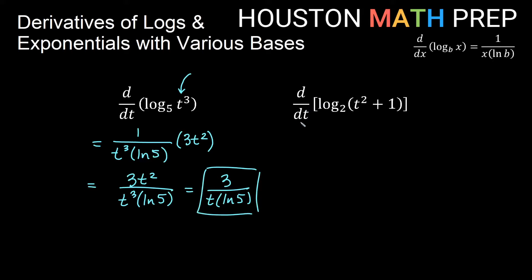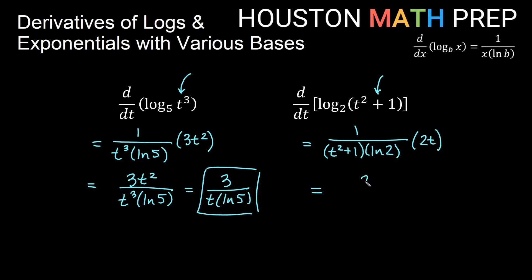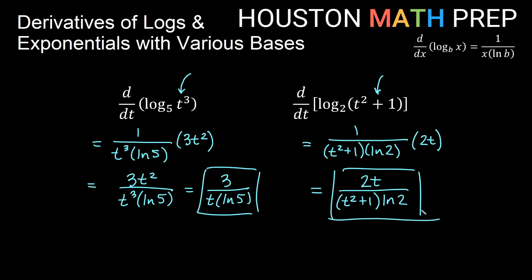Derivative with respect to t of log base 2 of (t squared plus 1): the derivative of log of something is 1 over that something — so 1 over (t squared plus 1) — divided by ln of the base, ln 2. The chain rule says multiply by the derivative of what's inside: the derivative of t squared is 2t, the derivative of 1 is 0, so we get 2t. Result: 2t over ((t squared plus 1) times ln 2). We cannot reduce the 2s because one 2 is inside an ln.